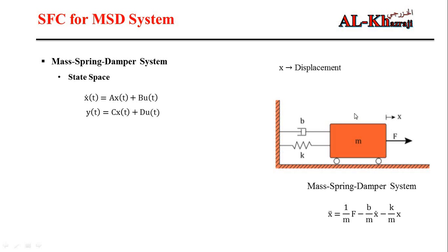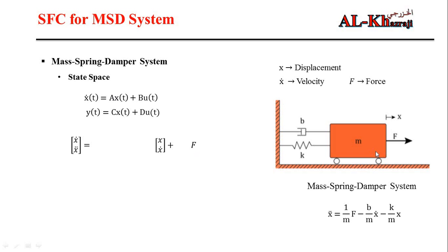For our system we have two states: the first state is displacement x, and the second state is velocity x-dot. The derivative vector contains x-dot and x double-dot. For the A matrix, the first row expresses the relationship between x-dot and the states: there is no relationship between x-dot and x so we put zero, and the relationship between x-dot and x-dot is one.